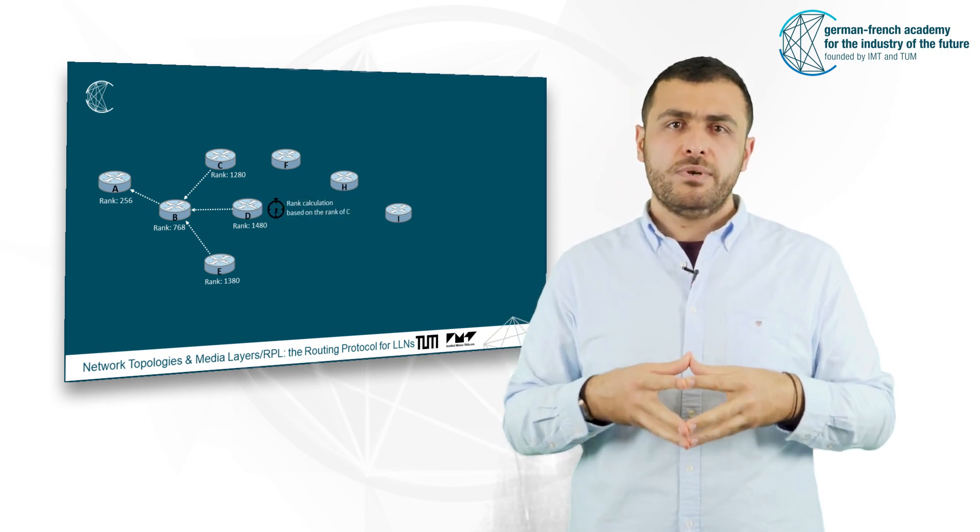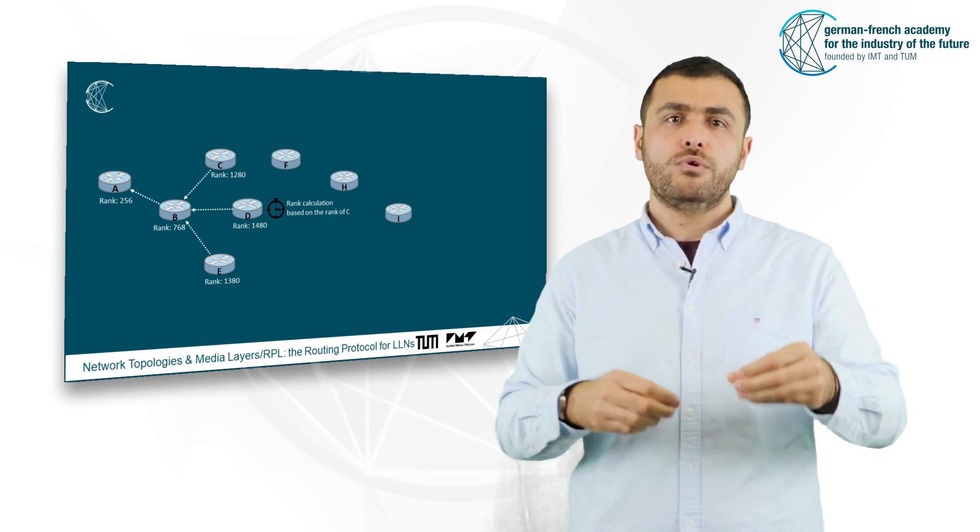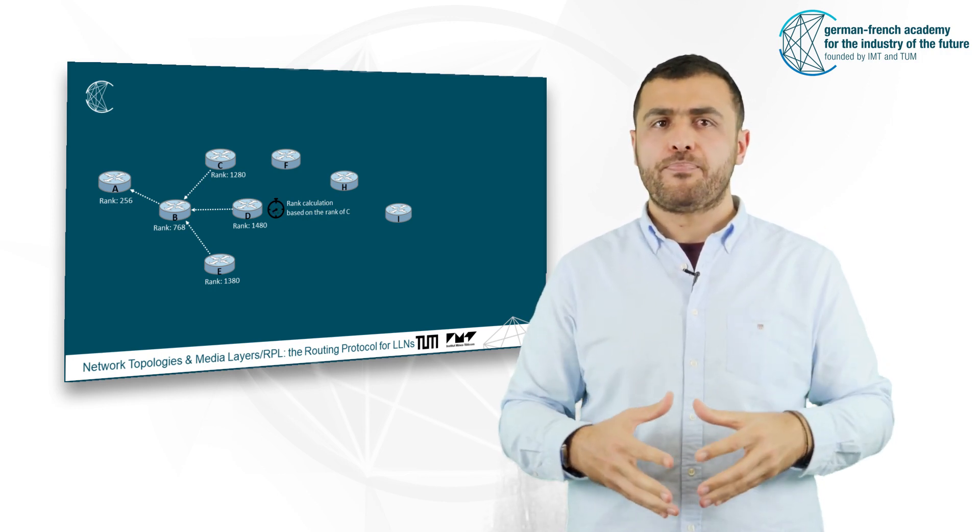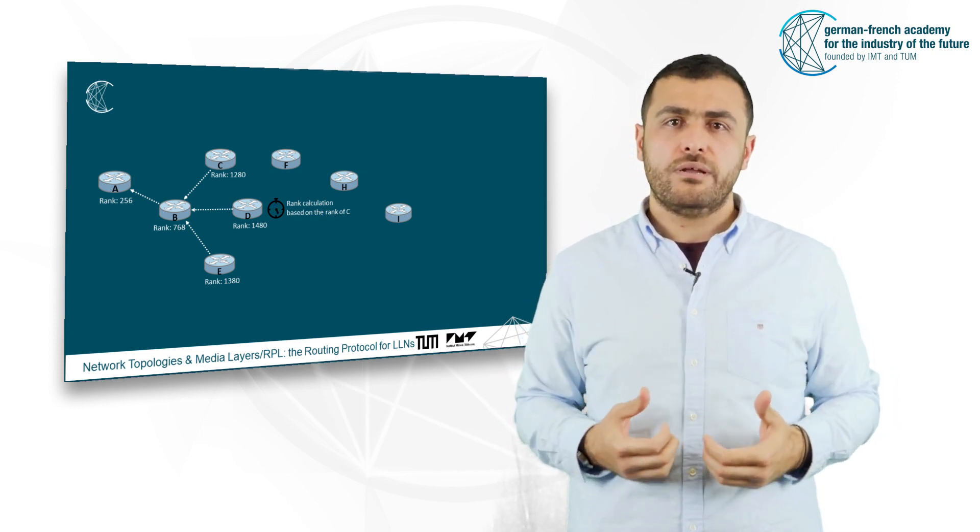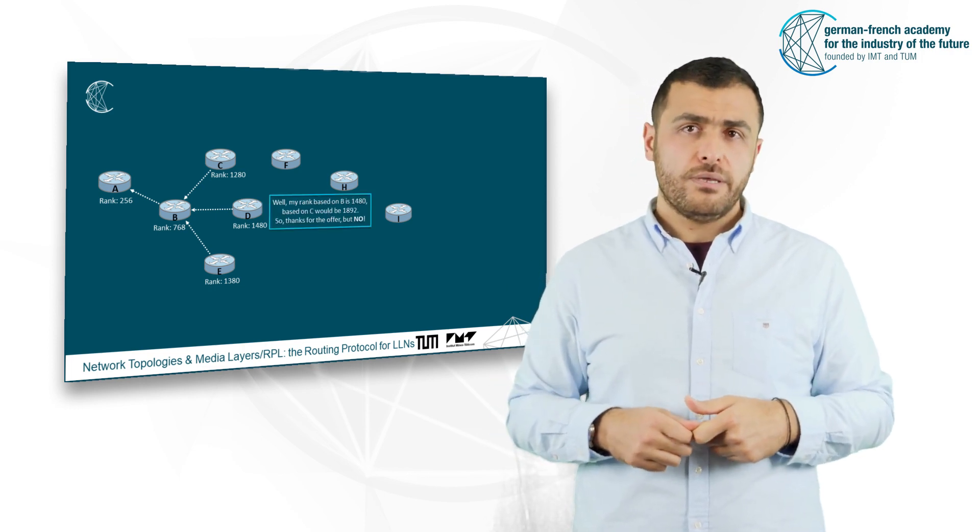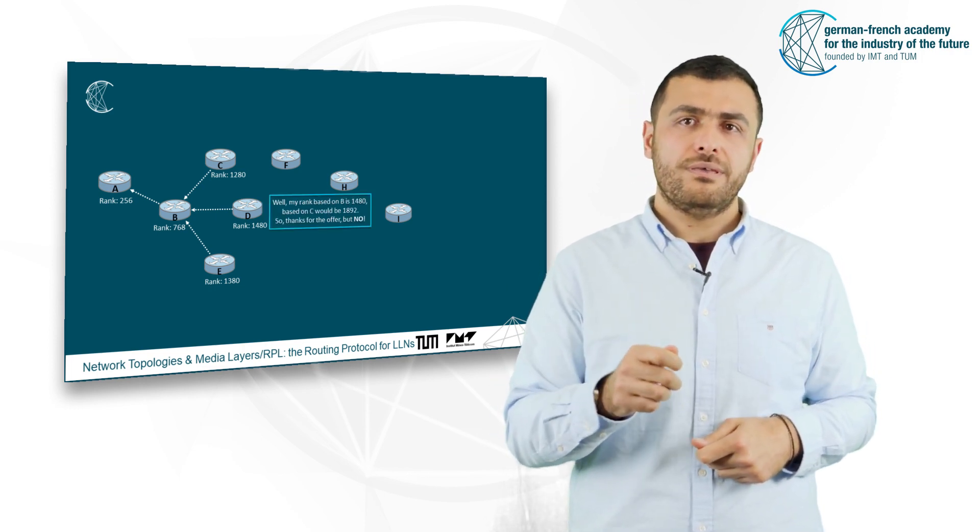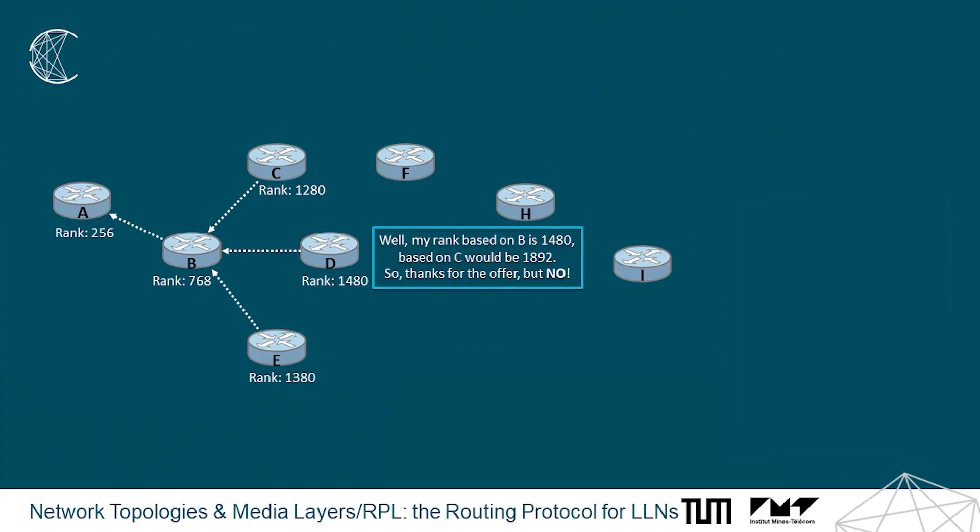In order to make the prioritization, the node D will compute the rank that it will obtain through the node C. And if this rank is smaller than its own rank, then it will switch to node C. Otherwise, if the new computed rank is greater than its current rank through node B, it will keep the node B as its preferred parent.